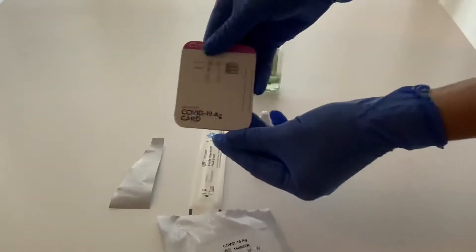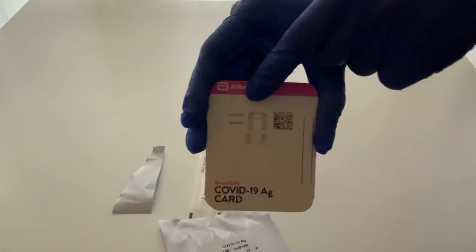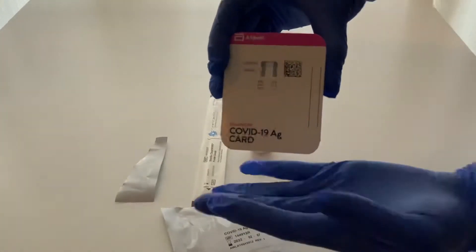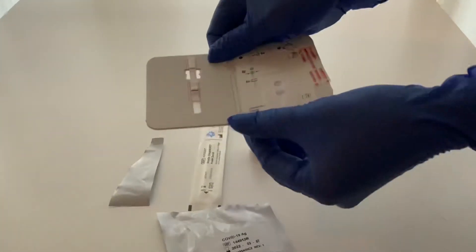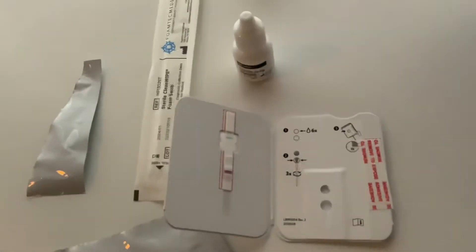You're going to grab this card out. As you can see, there's the control and sample window right there. Two lines is positive, one line is negative. That's your barcode that you're going to scan later on. This is a lay flat type card, so open it up so it's easier for yourself.